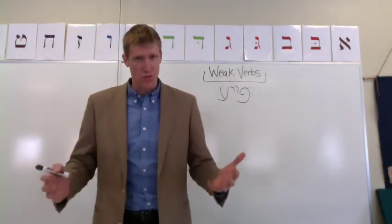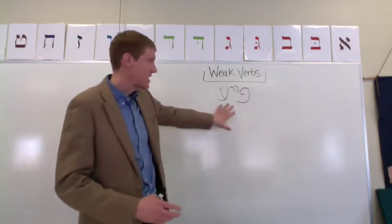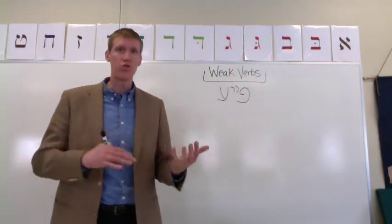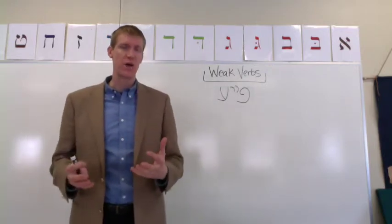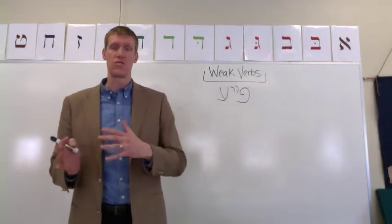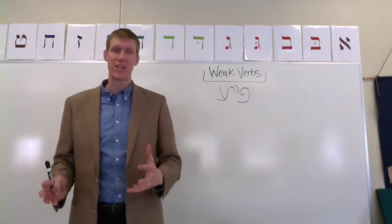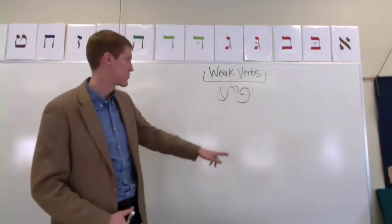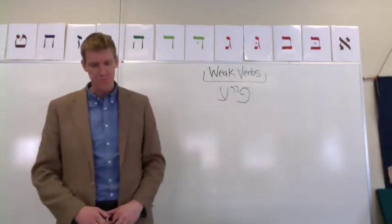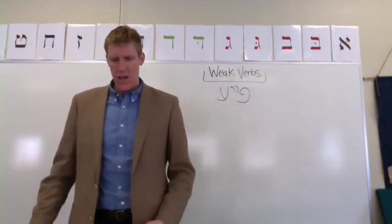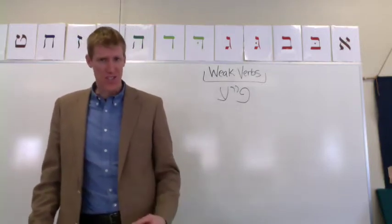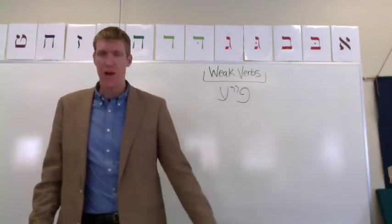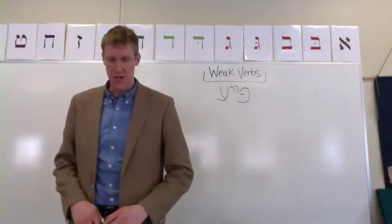A Pe-Ayin verb starts with a guttural, and because of the presence of the guttural, the regular vocal pattern will be adjusted or shifted in some way. Those changes happen consistently for every verb that begins with an Ayin. The pattern changes because of three things — the Ayin requires the pattern to change in three ways.